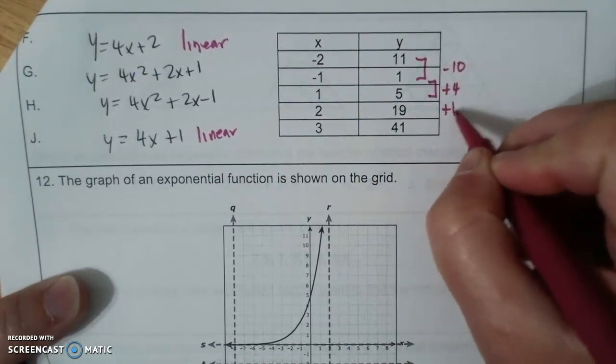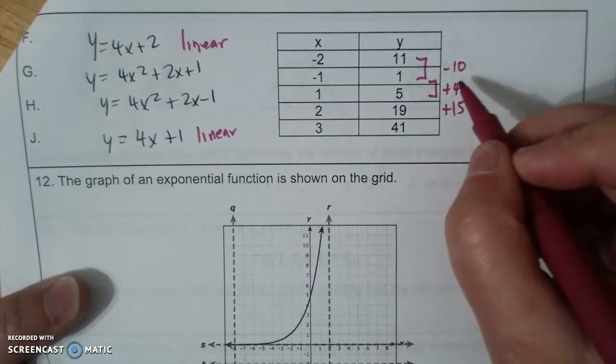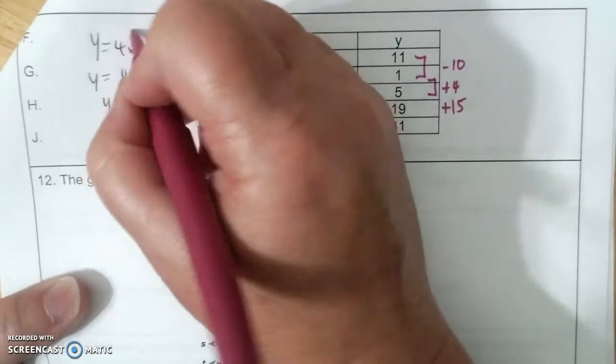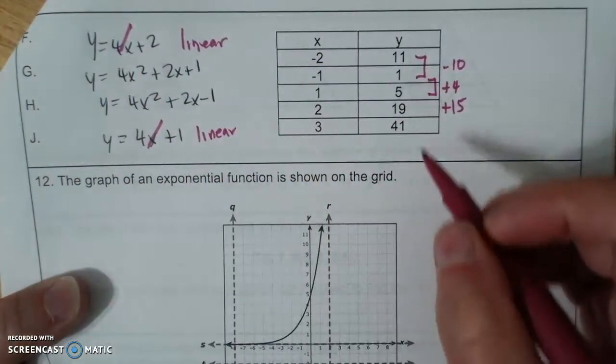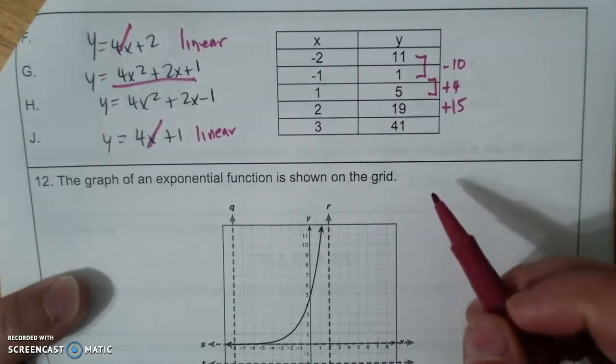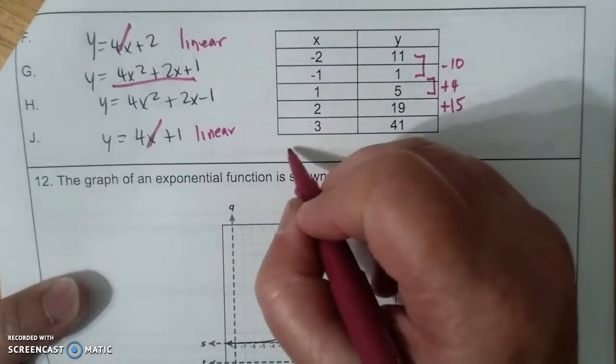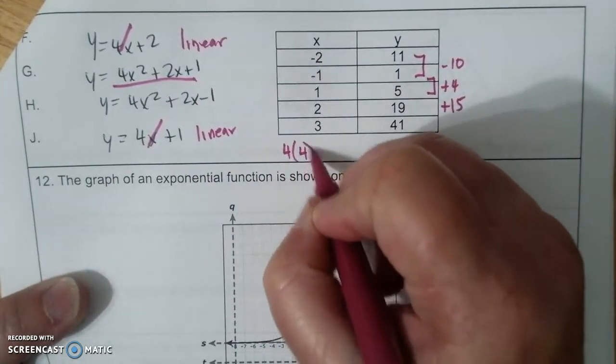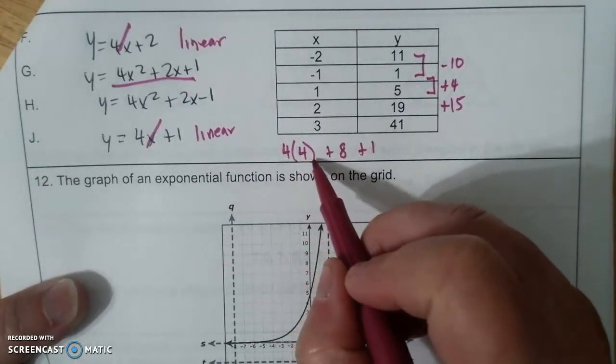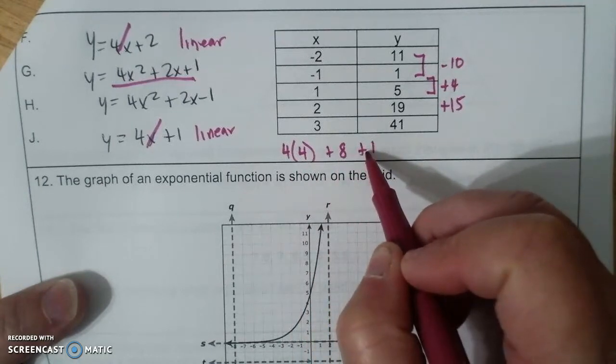And then these are all going up by one so it is not linear. And then I'm going to pick this one because it's positive and I'm going to plug in 2, so it's 4 times 4 plus 8 plus 1, and that is 16, 24, 25.